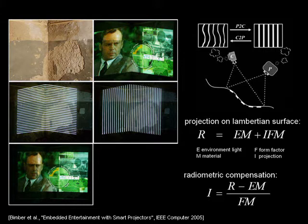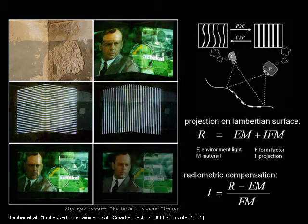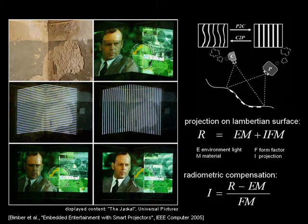A radiometric compensation can be performed by solving the equation with respect to the projection pattern. Eventually, the synthesized image appears as if projected on a planar white canvas, although this is physically not present.